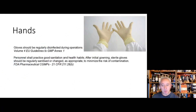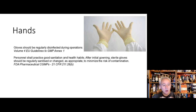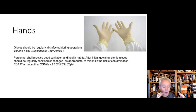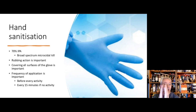We're going to start with looking at hands in the clean room. Good hand disinfection is built into the GMPs. EU GMP Annex 1 says gloves should be regularly disinfected during operations. The Code of Federal Regulations FDA says people need to practice good sanitization and health habits, including the wearing of sterile gloves, and that these are regularly sanitized in order to minimize the risk of contamination.